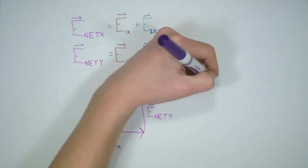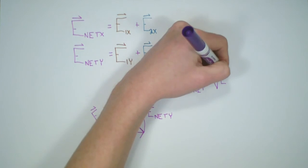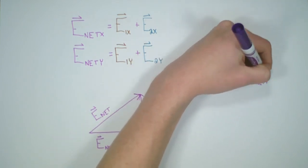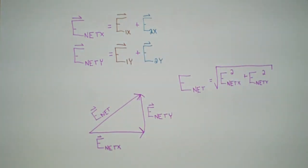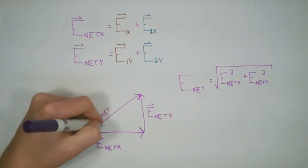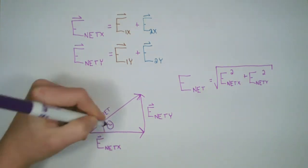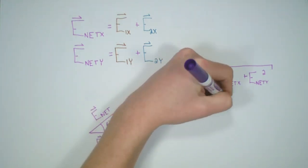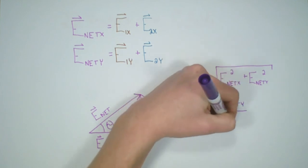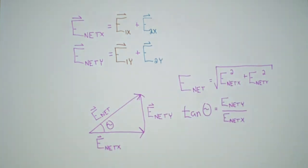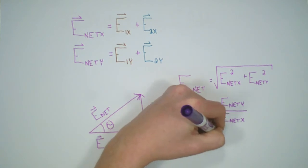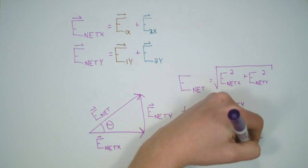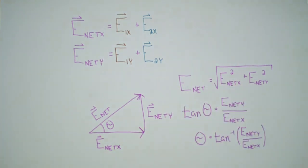Because we have a right triangle, E net equals the square root of E net x squared plus E net y squared, by the Pythagorean theorem. To fully describe the electric field as a vector, we also need the angle: tan theta equals E net y divided by E net x, so the angle is the arctangent of E net y divided by E net x. We've now fully described a two-dimensional electric field.